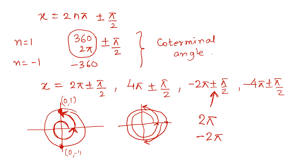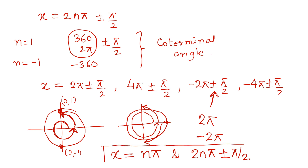So the general answer is: x = nπ (from the first case) and x = 2nπ ± π/2 (from the second case), where n belongs to the integers. There are infinite solutions in each solution set — substituting n = 0, 1, 2, 3, … and n = −1, −2, −3, … gives infinitely many values of x.